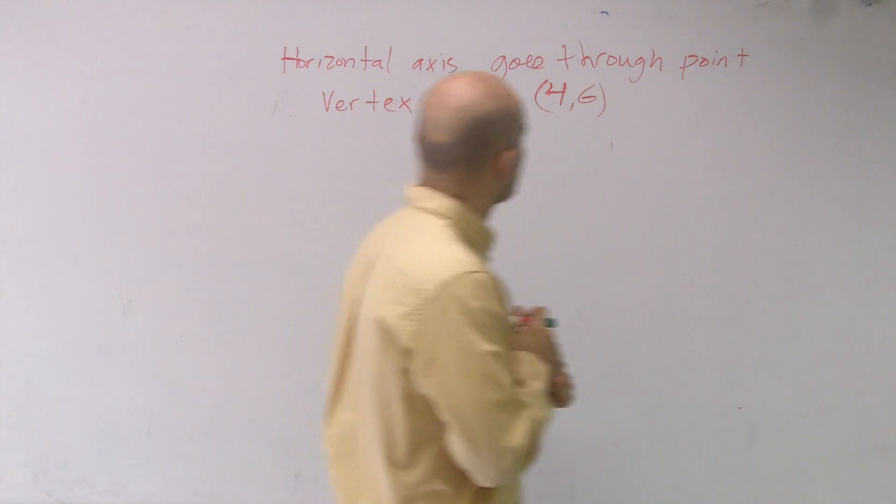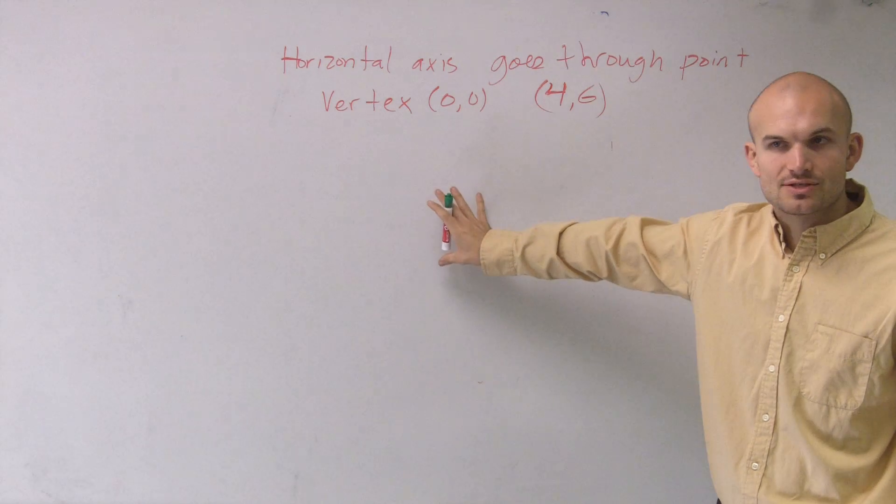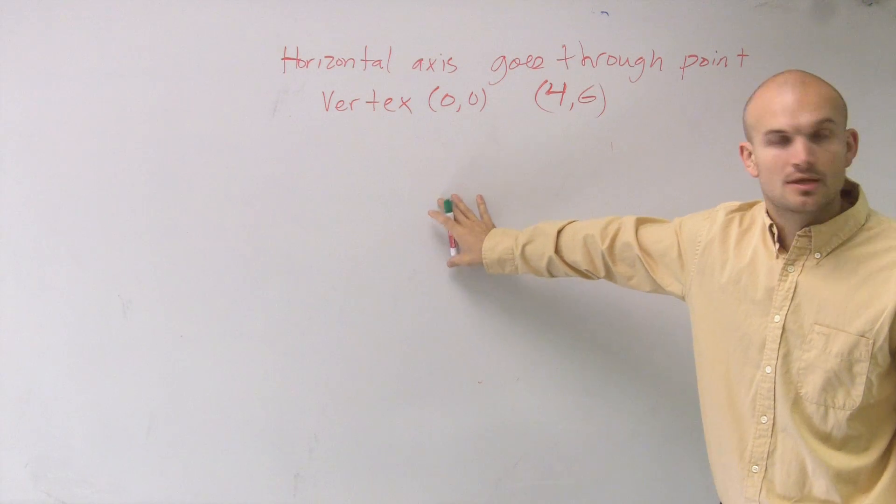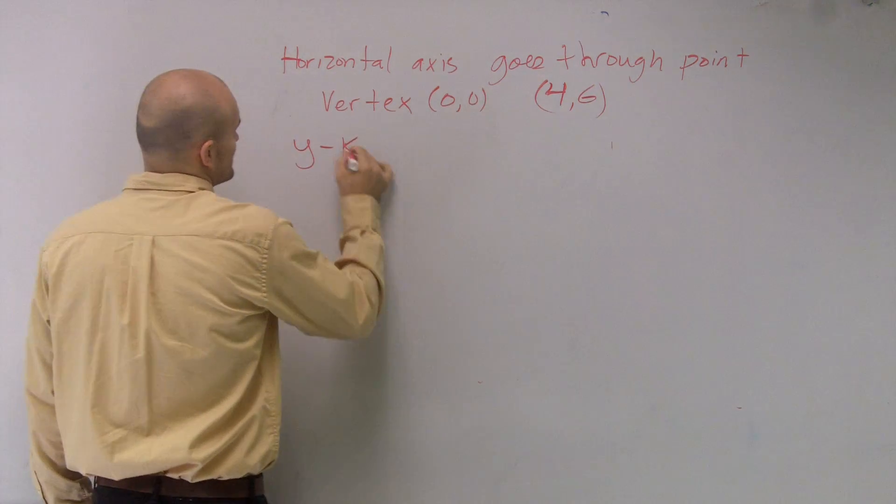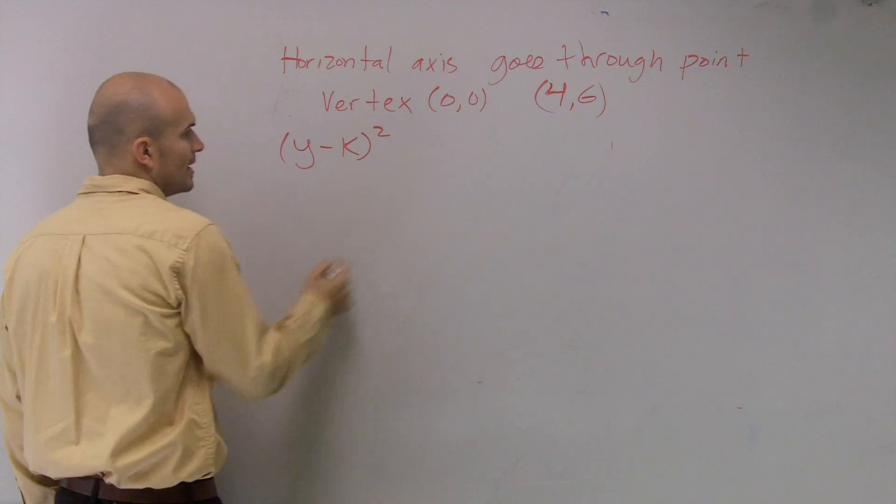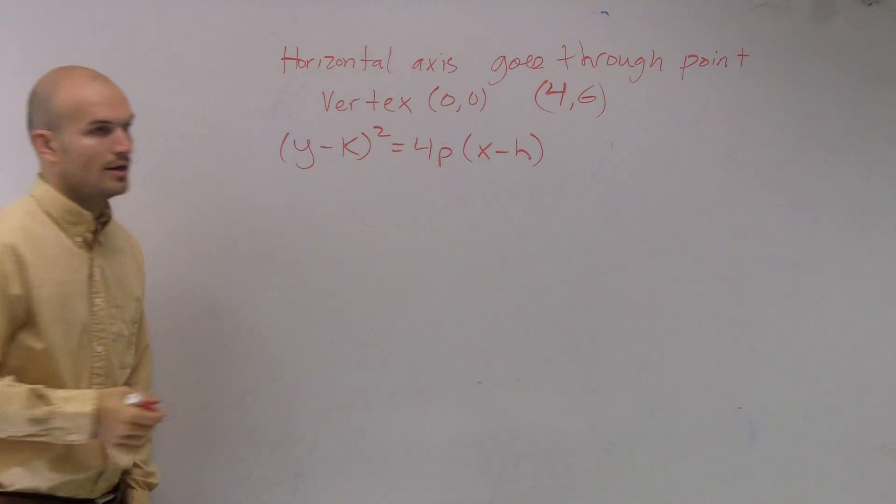So horizontal axis goes through a point, vertex is (0,0). So I determined that it was a horizontal parabola, right? So now we need to use the horizontal equation, which is (y-k)² = 4p(x-h).